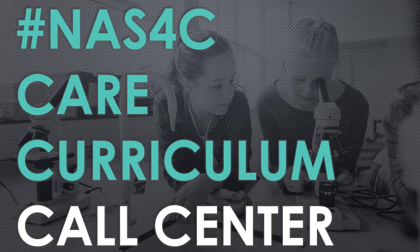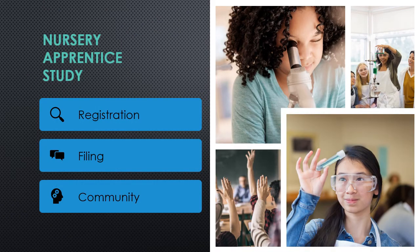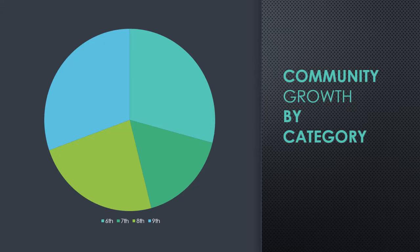ننتقل إلى الشريحة التالية. In English: nursery, apprentice, study. It covers researching or registration, filing, and community.